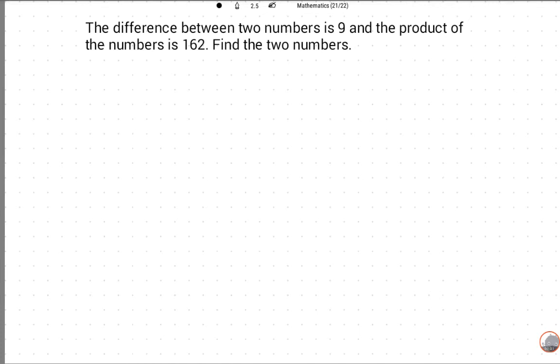First of all we read this question and try to solve. The difference between two numbers is 9 and the product of the numbers is 162. Find the two numbers.